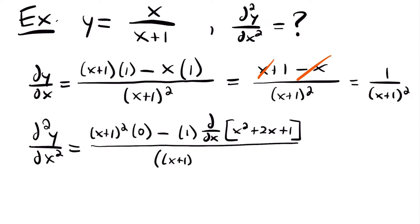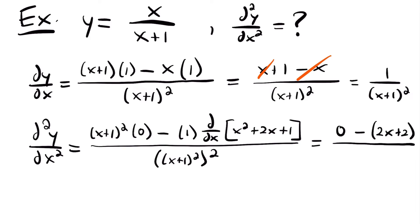This is all divided by the bottom function squared — so x plus 1 squared, squared. Simplifying: 0 times the quantity is just 0, minus 1 times the derivative of x squared plus 2x plus 1. That derivative is 2x plus 2. The derivative of x squared is 2x, the derivative of 2x leaves us with 2, and the derivative of 1 is 0. This is all divided by x plus 1 to the fourth power. Distributing the negative gives us negative 2x minus 2 over x plus 1 to the fourth power.